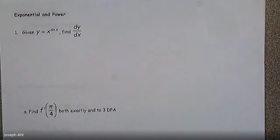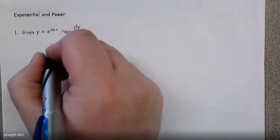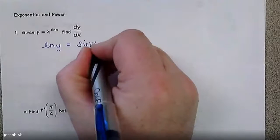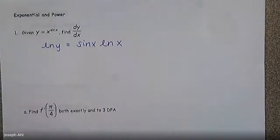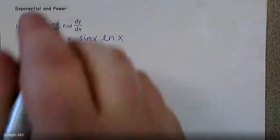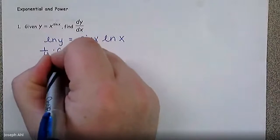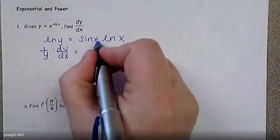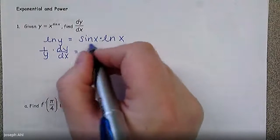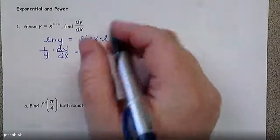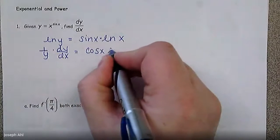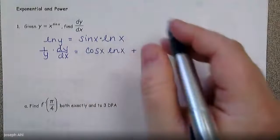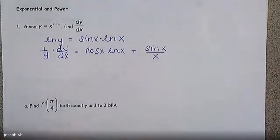For the first example, let's find dy/dx. We're going to take the ln of both sides: ln y equals, bring the sine x down, sine x times ln x. Then we take the derivative of both sides. So 1 over y times dy/dx is equal to — on this side we need some product rule — the derivative of the first is cos x times ln x, plus the derivative of the second is 1 over x times sine x, giving us sine x over x.